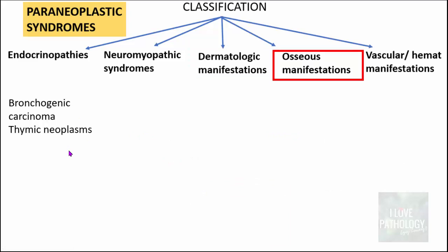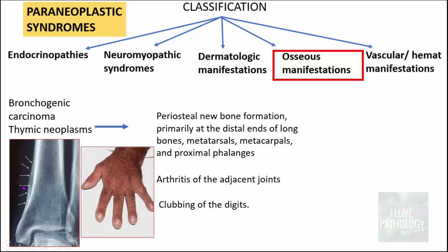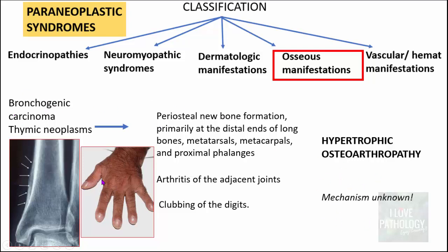For osseous manifestations, bronchogenic carcinoma and thymic neoplasms can produce periosteal new bone formation, primarily at the distal ends of long bones, metatarsals, metacarpals, and proximal phalanges. Patients may also present with arthritis of adjacent joints and clubbing of digits. This condition is known as hypertrophic osteoarthropathy, and its exact mechanism is not known.